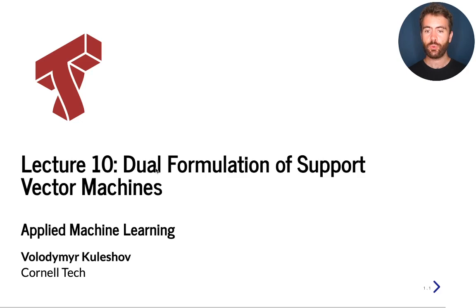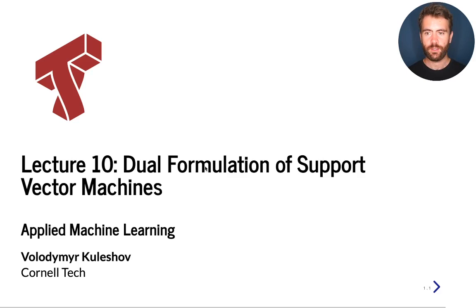We're going to use a set of concepts in optimization called Lagrange duality in order to define a new version of the optimization problem from the earlier lecture. In this video, I would like to start with the general mathematical concept of Lagrange duality, and then in the next videos we are going to apply this concept to support vector machines and derive new algorithms and formulations.